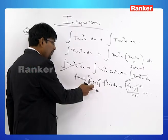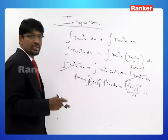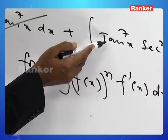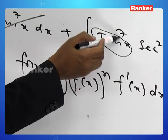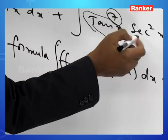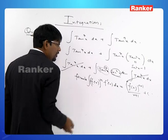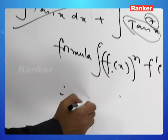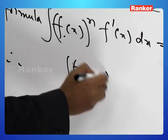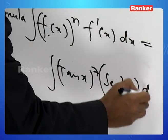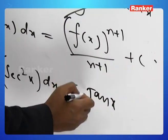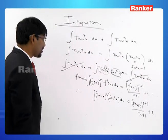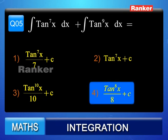Using the formula ∫f(x)ⁿ f′(x) dx = f(x)ⁿ⁺¹/(n+1) + c with f(x) = tan x and n = 7, and noting that f′(x) = sec²x, the integral evaluates to tan⁸x/8 + c. That is clearly seen in option 4, so the answer is option 4.